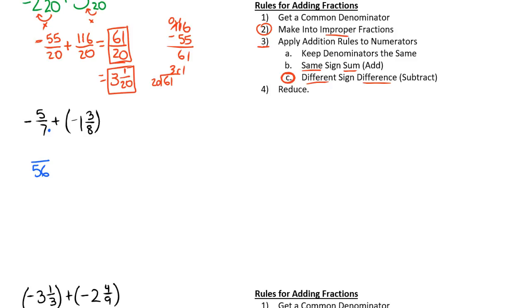We have 56 here. We multiply 7 by 8 to get to 56, so we multiply 5 by 8 to get our numerator, which is 40. This negative right here is out front. We can just float it to the top. It's either the top or the bottom that's negative. Then we have plus negative 1, and we need to get 56, so we multiply by 7, which gives us 21.